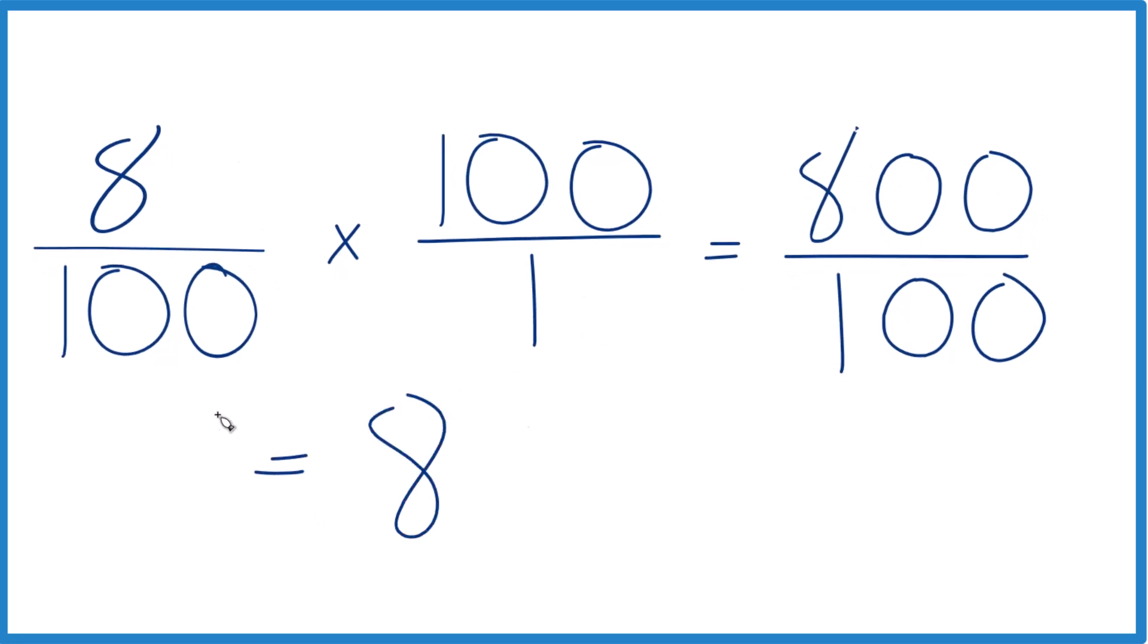So again, 8% of 100 is just 8. You could change this to a decimal and then multiply by 100, and you would get 8 as well. Either way, this is pretty quick. This is Dr. B, and thanks for watching.